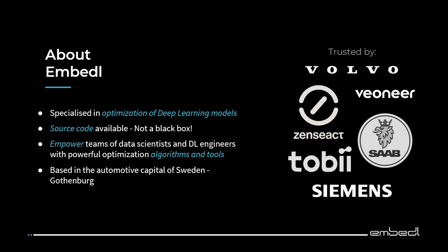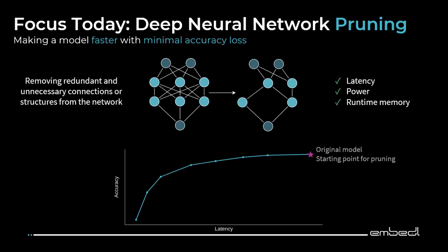In general, there are many different ways to optimize deep learning. We can think of compression, we can think of neural architecture search, and there are many posters on new architecture search at this conference. But I want to focus on pruning today.